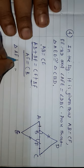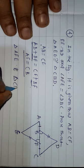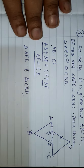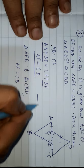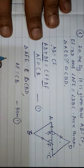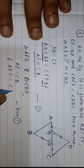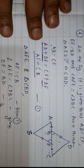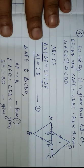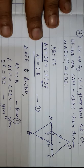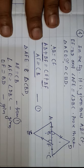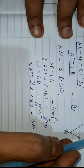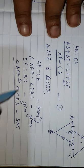Finally, in triangle AFE and triangle CBD: AF is equal to CB — from result 1. Angle AFE is equal to angle DBC — this is given. EF is equal to BD — also given. From these three, triangle AFE is congruent to triangle CBD by SAS — side-angle-side criteria. So these two triangles are congruent.